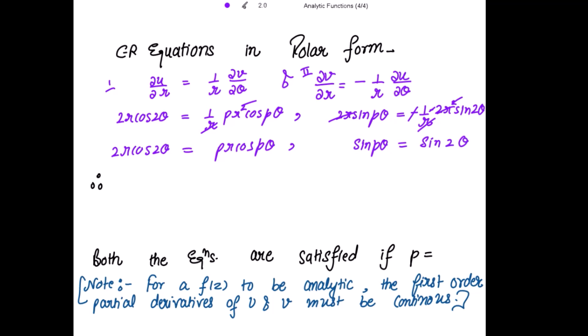Comparing both sides of each equation, we see that p = 2. From the first equation, comparing 2r·cos(2θ) = p·r·cos(pθ) also gives p = 2. Both Cauchy-Riemann equations are satisfied when p = 2. Hence, the value of p is 2.